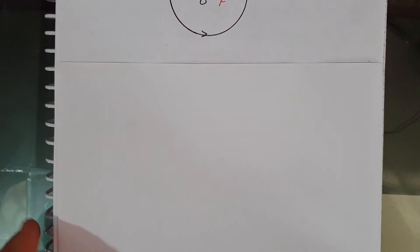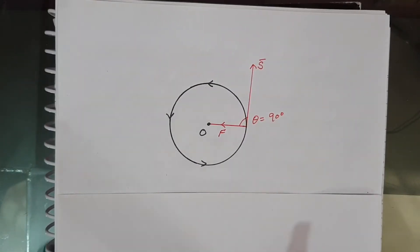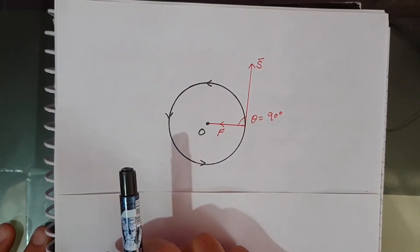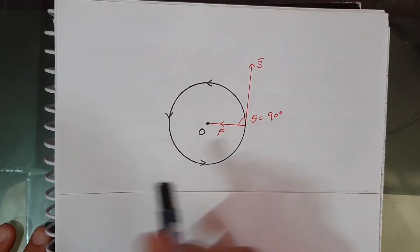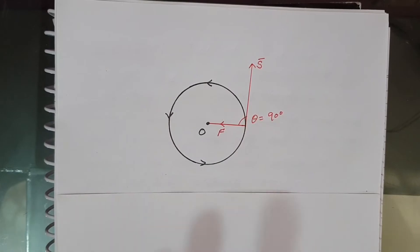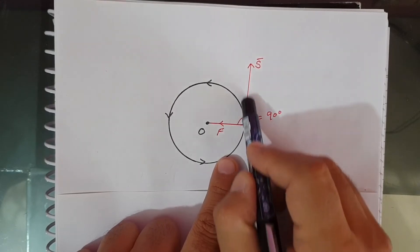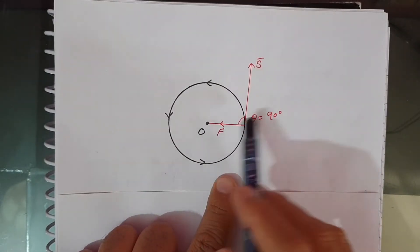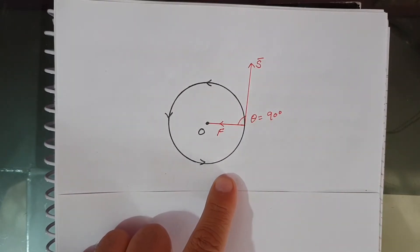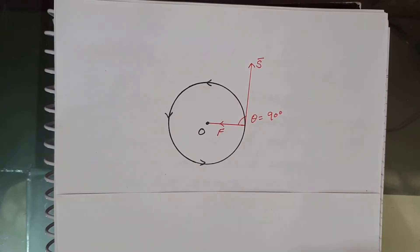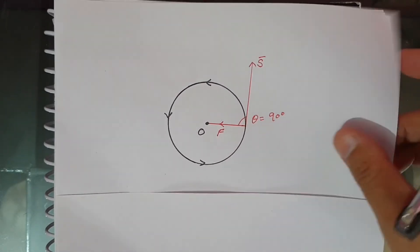Consider when a body tied to one end of a string is rotated in a circle: the work done by the centripetal force is zero, because the centripetal force always acts toward the center, and the displacement vector is tangential — the angle between them is 90 degrees. Applying W = Fs cos 90° gives zero. Similarly, no work is done when a satellite revolves in a circular orbit around a planet.